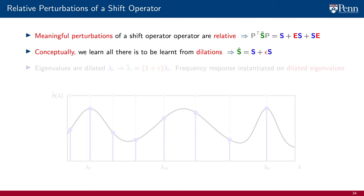Conceptually, we saw that we can learn all that there is to be learned from the study of dilations, where the error matrix is epsilon times identity, which implies the shift is scaled or dilated by 1 plus epsilon.